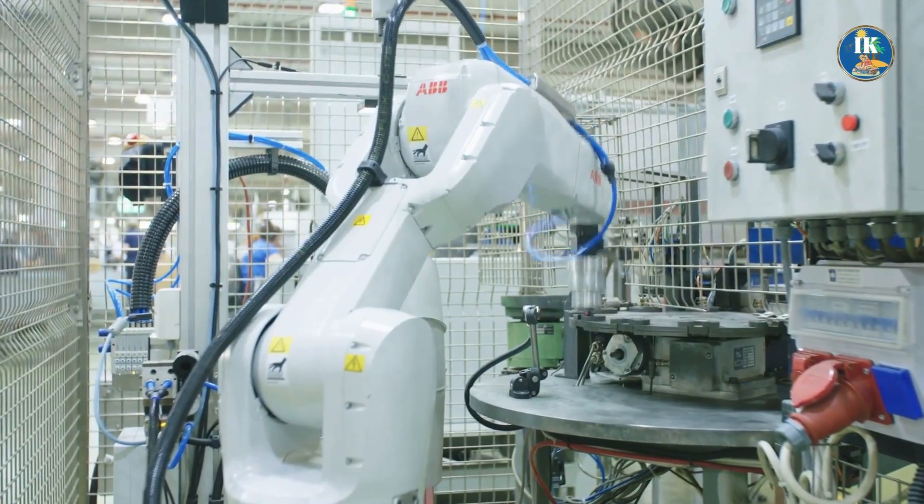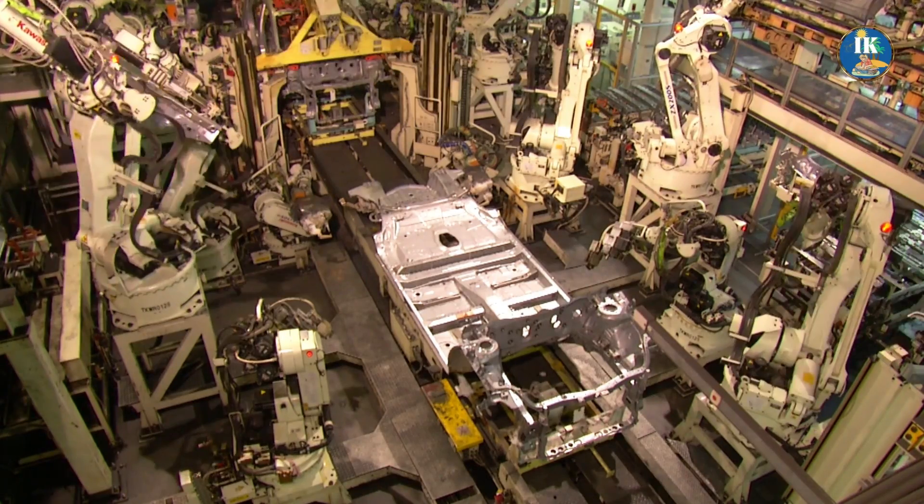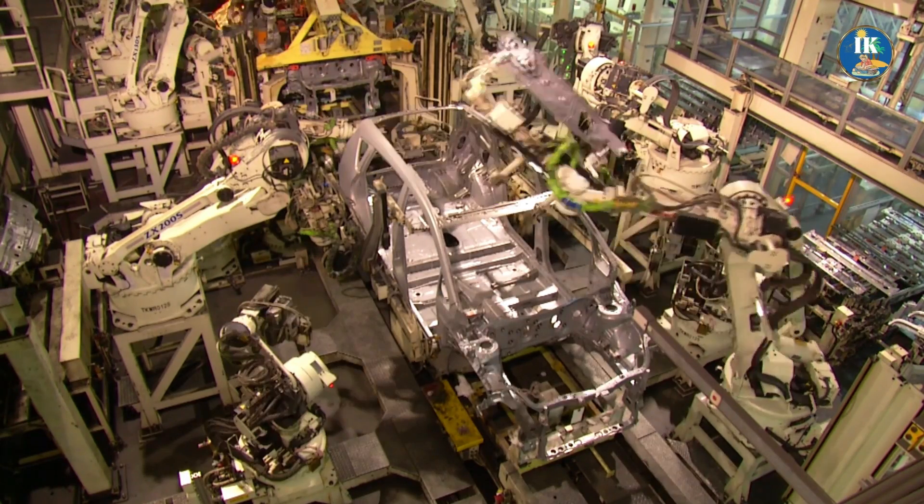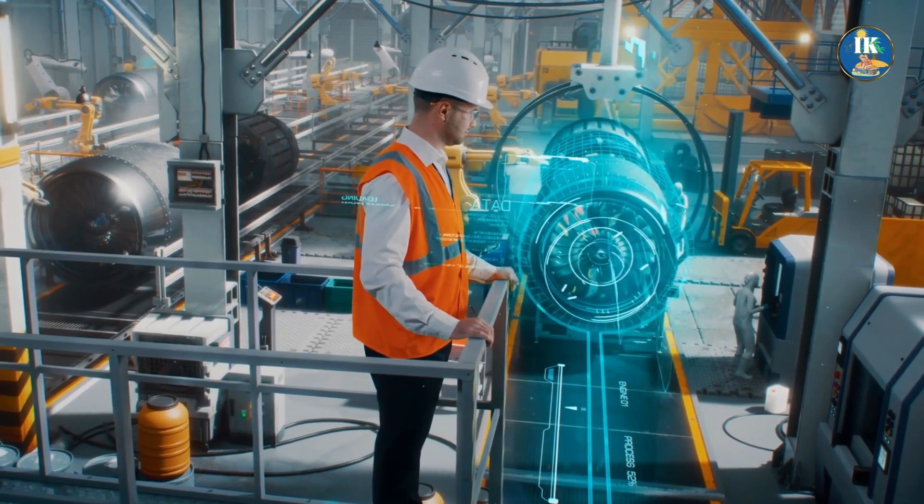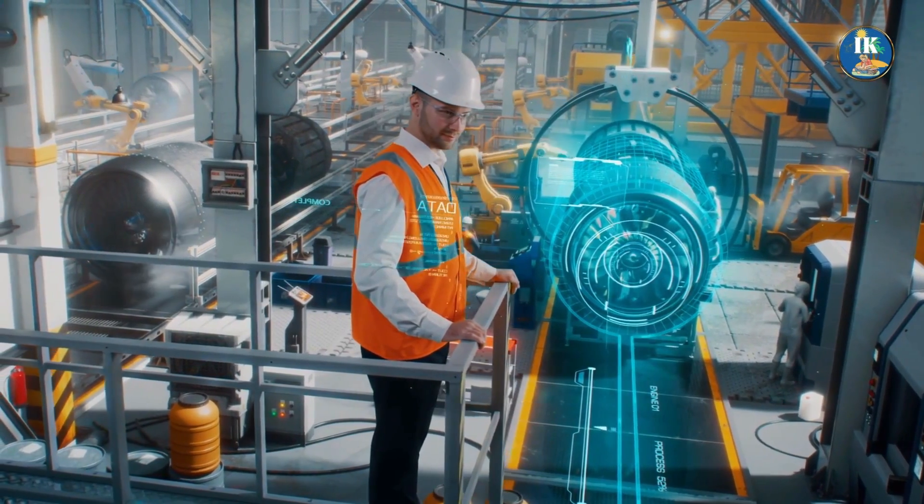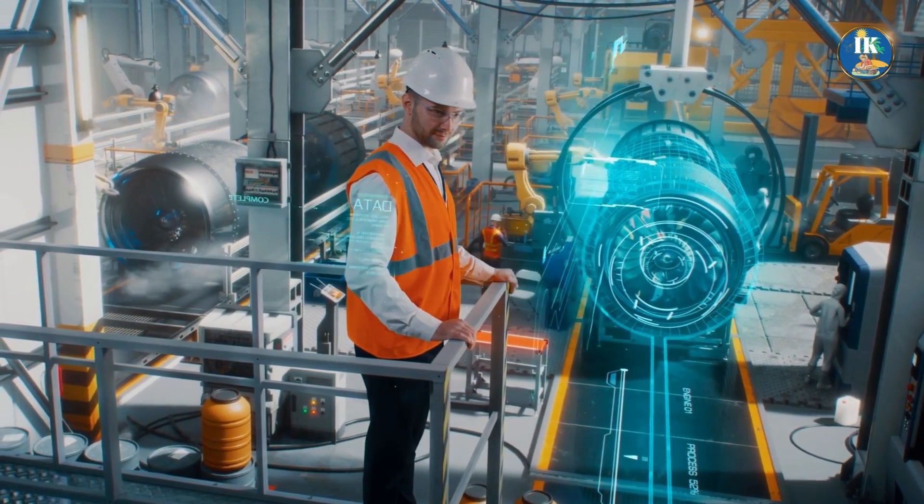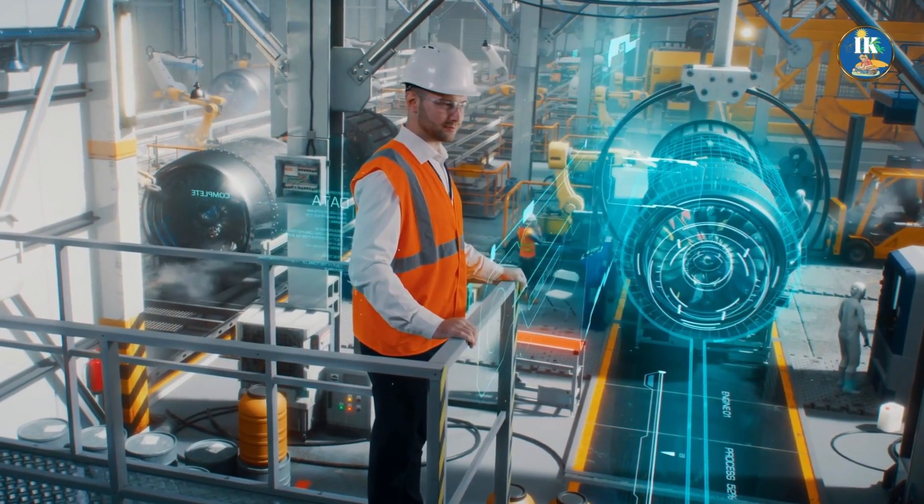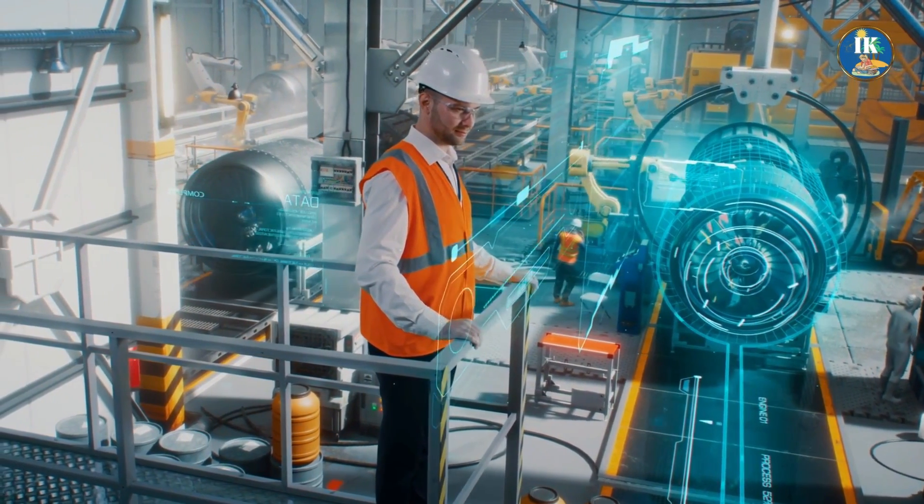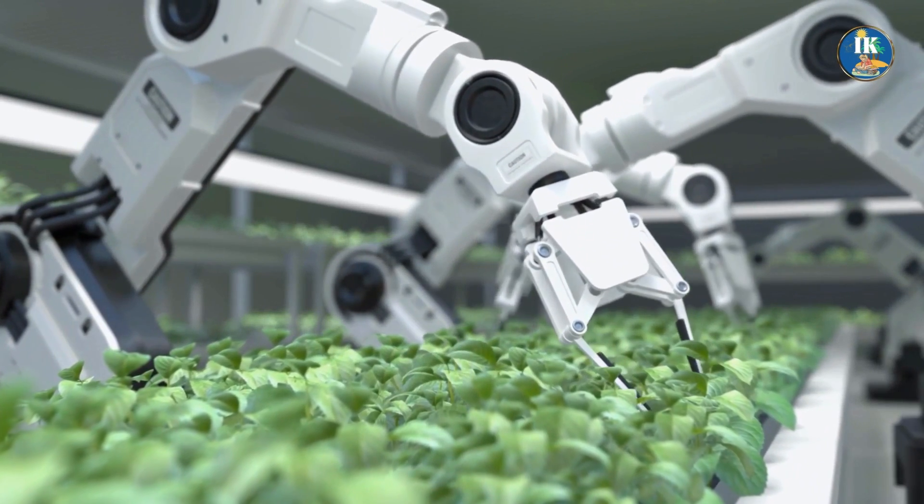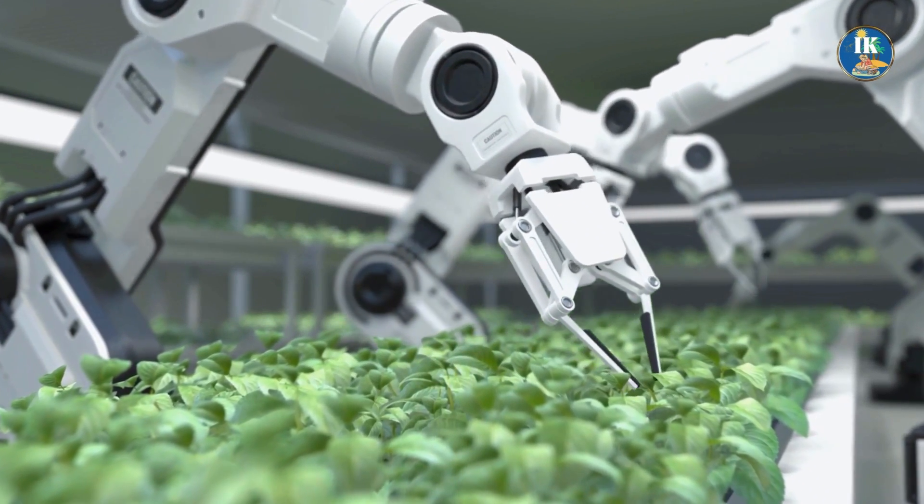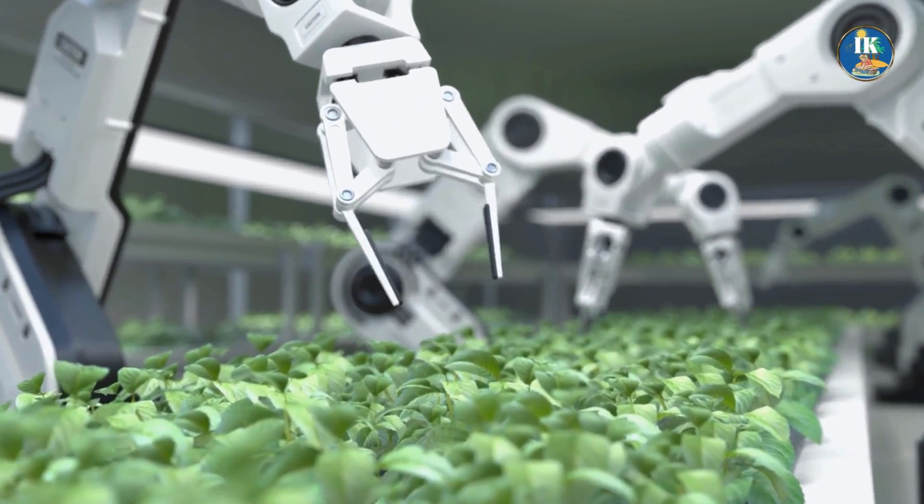In manufacturing, automation has already had a major impact, with robots taking over many repetitive and dangerous tasks. For example, in automotive manufacturing, robots are used to assemble cars with incredible precision and speed, reducing costs and increasing efficiency. In other industries, such as food processing and packaging, automation is being used to increase production and ensure food safety.